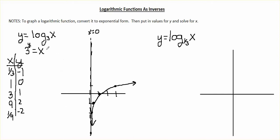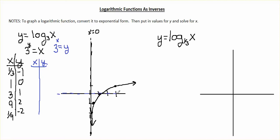Now let's take the inverse of our logarithmic function and graph it on the same axis to see what the inverse looks like. To find the inverse, we just switch our x and y values. Taking the exponential form and switching x and y, we get 3 to the x equals y. I'll set up a table, and since this is an exponential function not shifted vertically, the horizontal asymptote is at y = 0. I'll plug in negative 1, 0, and 1.